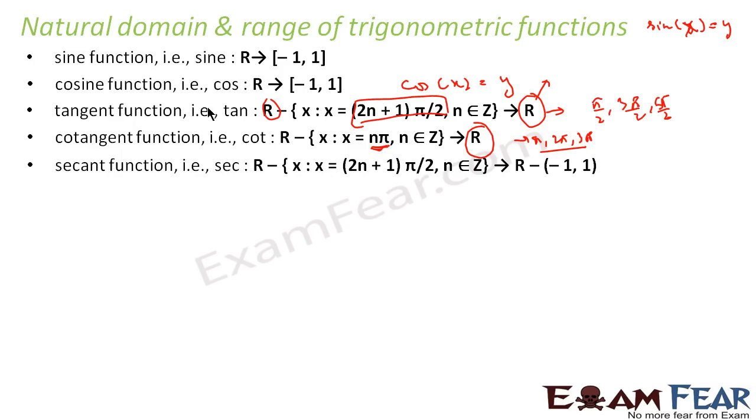Similarly for sec, sec and tan is almost same because both has cos in the denominator. Sec is 1 by cos and tan is sin by cos. So both have almost same, but here if you see, the range changes. The range will be any real number minus, minus 1 to 1.